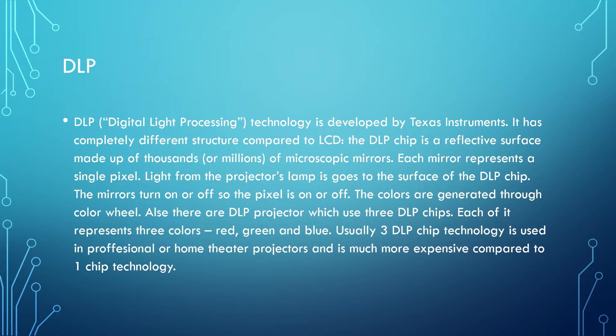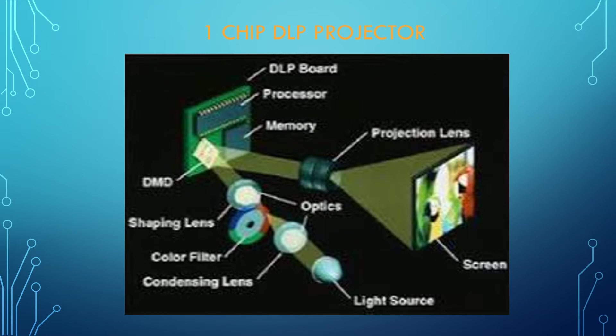There are also DLP projectors which use three DLP chips, each representing one of the three colors: red, green, and blue. Usually, three DLP chip technology is used in professional or home theater projectors and is much more expensive compared to one-chip technology. As we can see how the one-chip DLP projector works from the given diagram below.